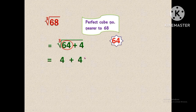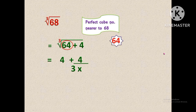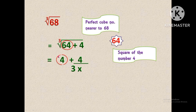Next we write plus, then the 4 as it is, divided by — in the denominator we have to write 3 into. Whatever the problem may be, in this step you always write 3 into in the denominator. Next, you have to find the square of the number 4, which is the cubic root of 64. So we write 4 squared. These are the steps of the trick.